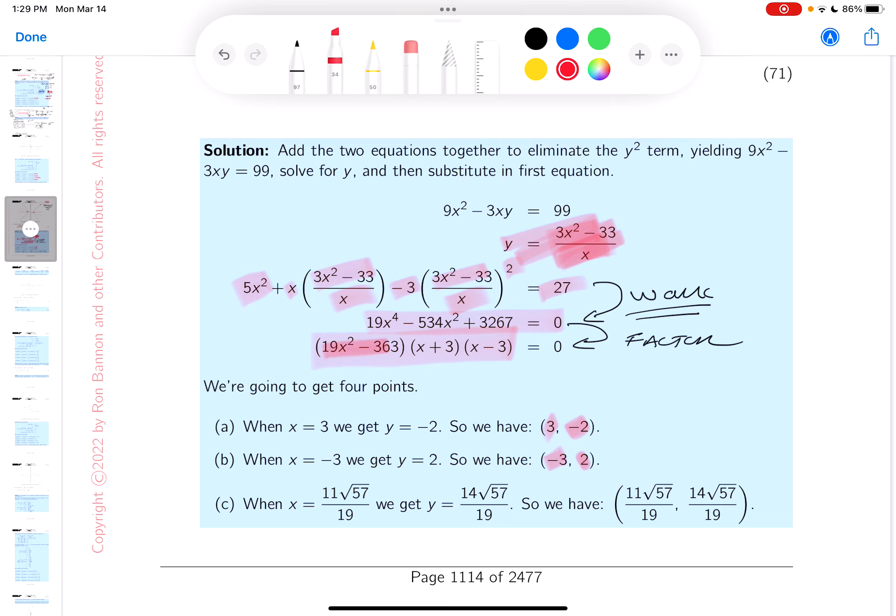The other guy's a killer though. I'll point out what I mean by that. 19x² has to equal 363. x² is 363 over 19. Then you do the square root of that. Kind of nightmarish. There's no doubt about it.